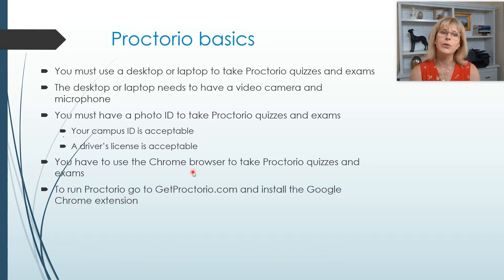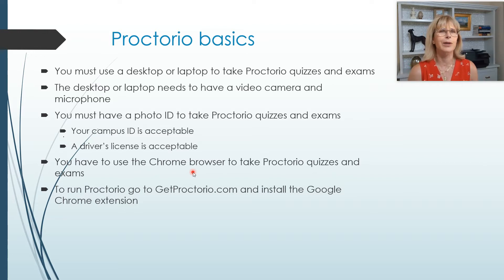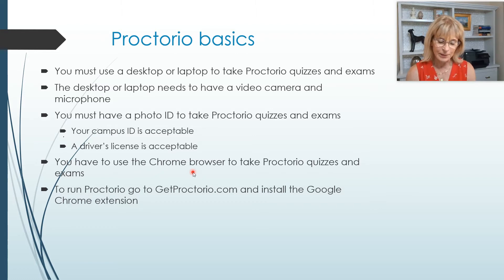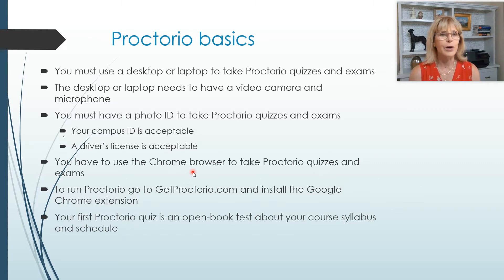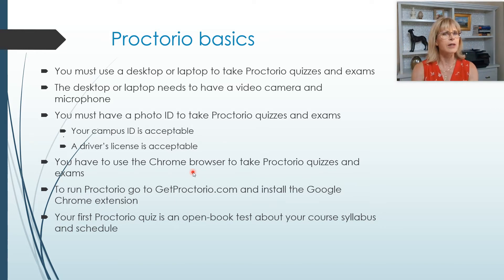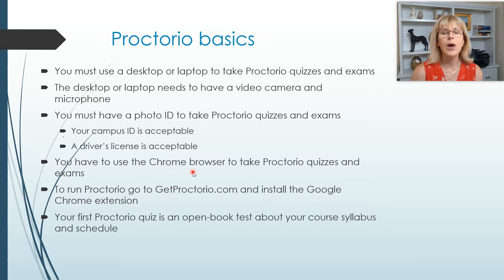To run Proctorio, you can go to getproctorio.com and install the Chrome extension — it's really quick, it took me like 30 seconds to install the Chrome extension. But you also can do it directly through Canvas. Your first Proctorio quiz is an open book test about your course syllabus and schedule, and it is due by August 21. Get going on it. If you're looking at this before the class even starts, you can go ahead and access the course syllabus quiz through Canvas and get that done right away. If you haven't completed your Proctorio course syllabus quiz by August 21, then you'll be dropped from the course.